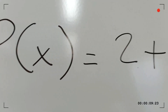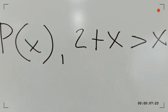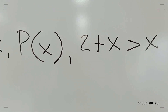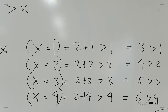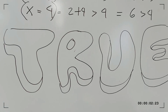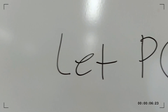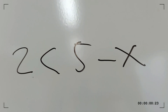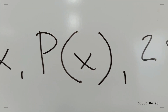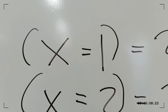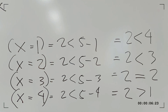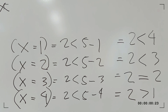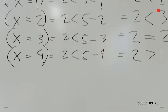Another example: let P(x) be '2 plus x is greater than x.' For all x of P(x), '2 plus x is greater than x' — since x will always be smaller because of the 2 in the proposition, therefore this notation has a truth value of T, or simply true. Another example: let P(x) be '2 is less than 5 minus x.' For all x of P(x), if x equals 4, then 2 is going to be greater than 1, which is supposed to be greater than 2. Therefore, this notation has a truth value of F, or simply false.